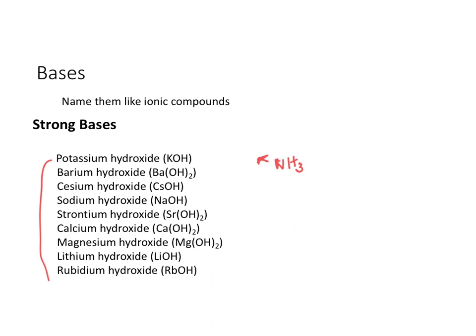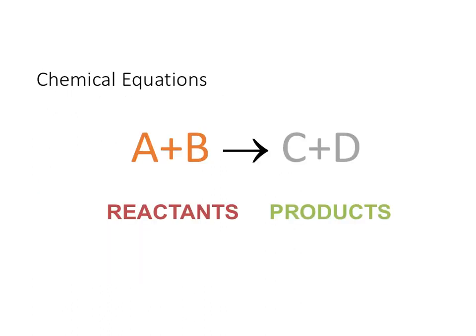Now that we've talked about acids and bases and how to name them, let's approach formula writing. When we look at chemical equations, we have a specific format to follow. The first thing to point out is that we do not use equal signs in chemical equations — we use arrows. Sometimes it's a single-sided arrow, sometimes it's a double-sided arrow, but basically the arrow divides your reactants from your products.